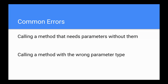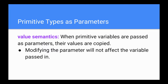Common errors: some common errors with parameters are calling a method that needs parameters without them, calling a method with the wrong parameter type, or possibly the wrong number of parameters. Both of these will cause compile errors. Regarding primitive types as parameters: value semantics means that when a primitive value is passed as a parameter, its value is copied over. So modifying a parameter will not affect the variable passed in. For example, if you have int x in main and pass it to another method, adding 3 to x within that method won't add 3 to x in main — only to the copy of x for that method.